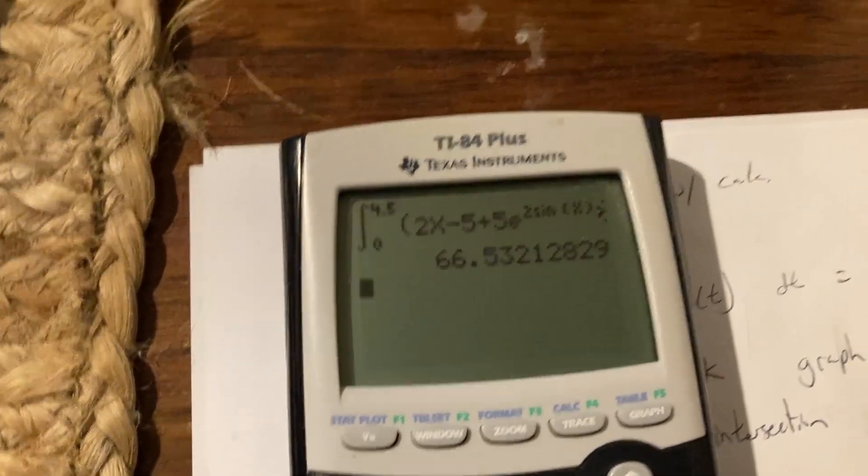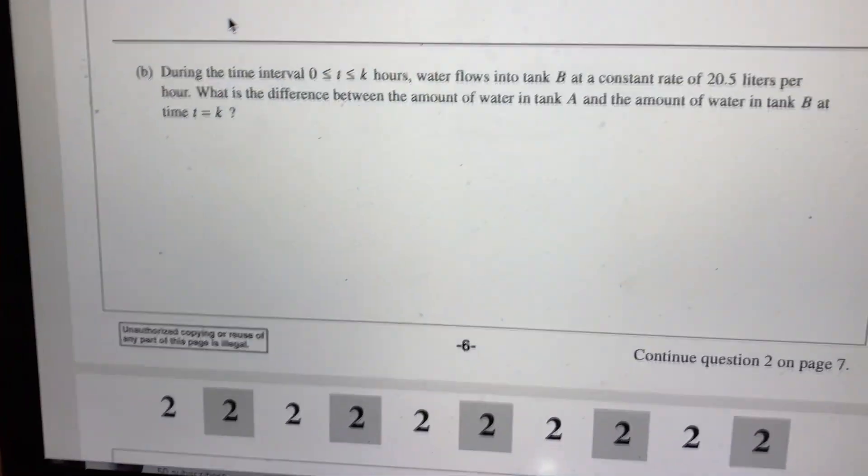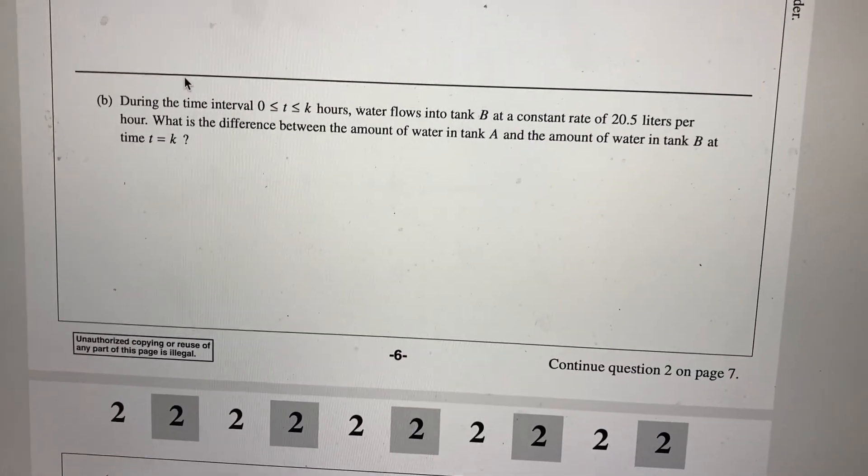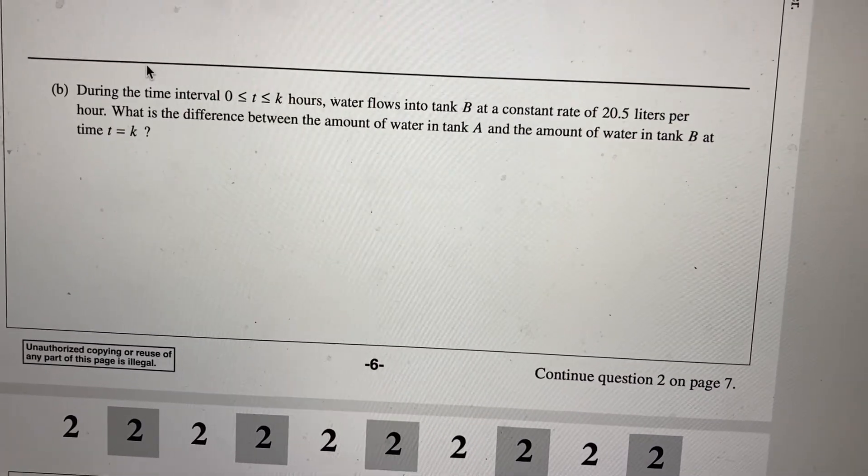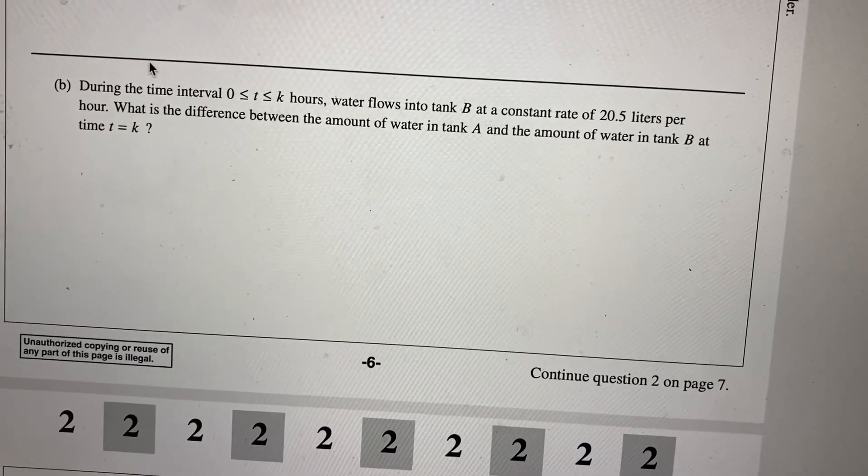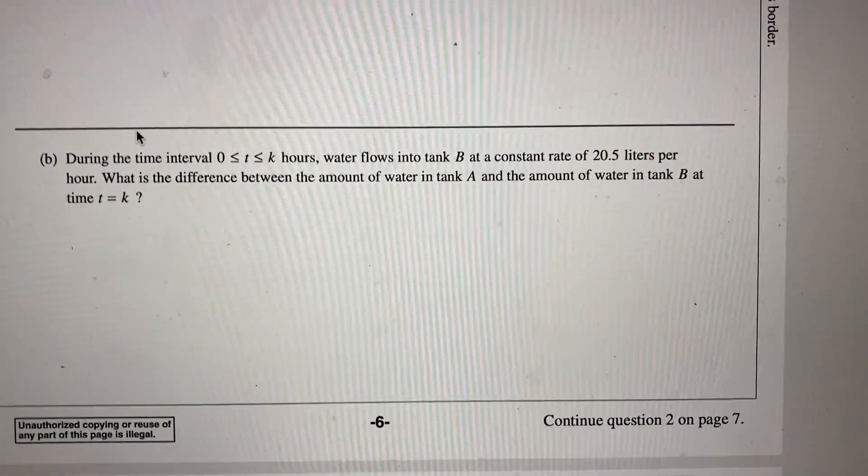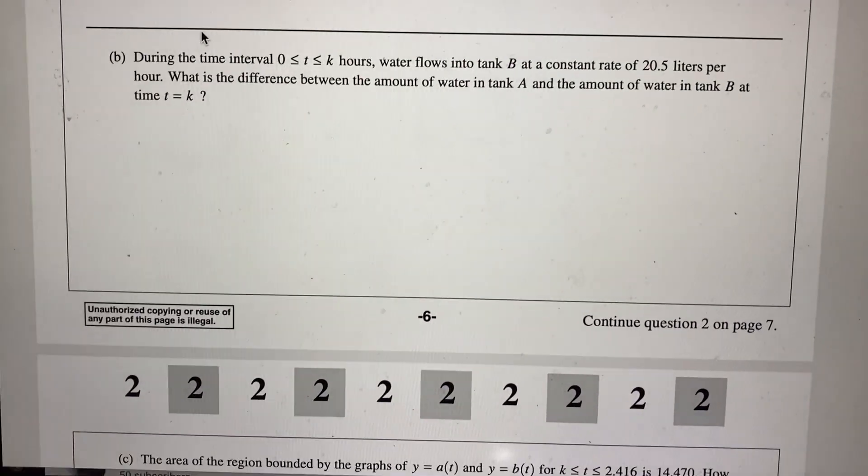Okay, so now the next one. It says during the time interval 0 to K, water flows into tank B at a rate of 20.5. What is the difference between the amount of water in tank A and the amount of water in tank B at time t equal to K?